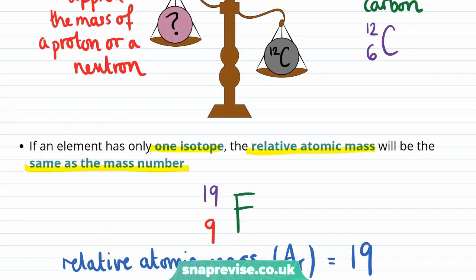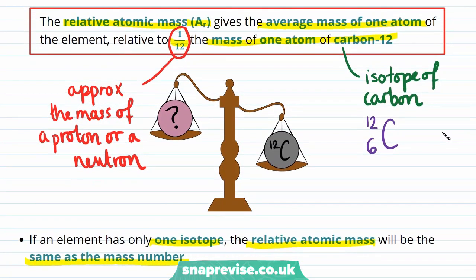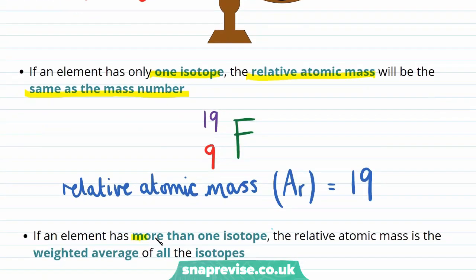So, what about if an element has more than one isotope? Well, we need to look at the definition of our relative atomic mass, which tells us that this value gives us the average mass of one atom of the element. What this means is that if an element has more than one isotope, the relative atomic mass is going to be the weighted average of all of the isotopes.